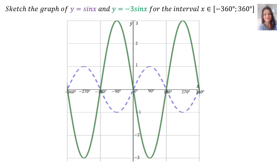Let's look at another example. Sketch the graph of y = sin x and y = minus 3 sin x for the interval x is an element of minus 360 up to 360. The purple graph is y = sin x, and the green graph is y = minus 3 sin x.